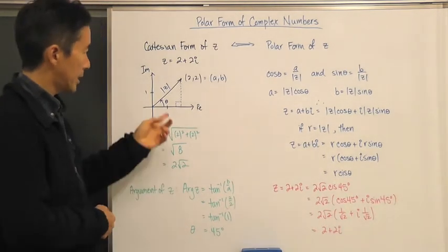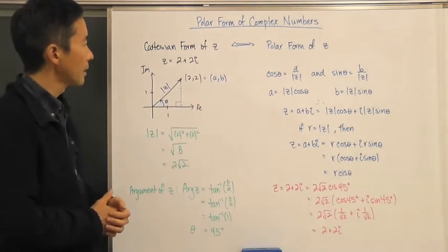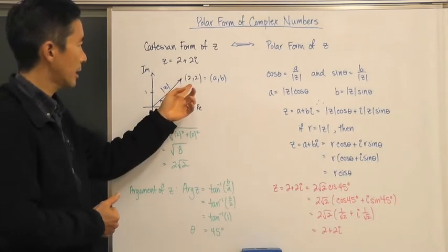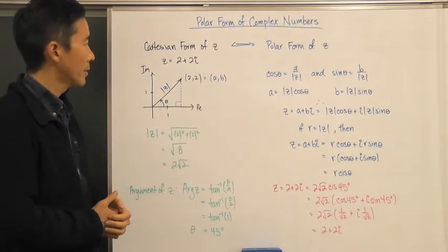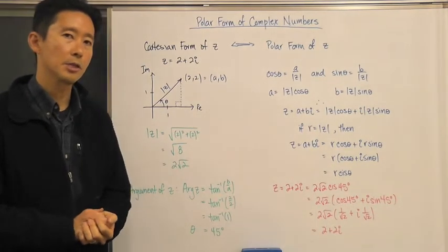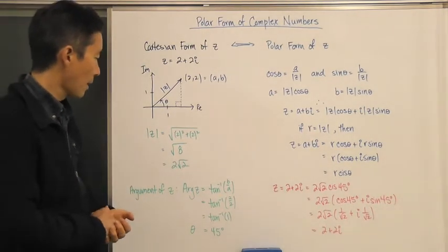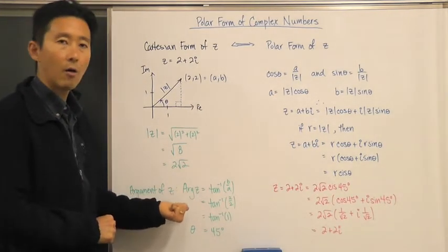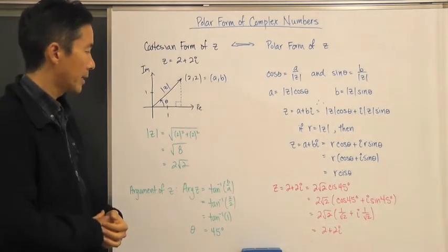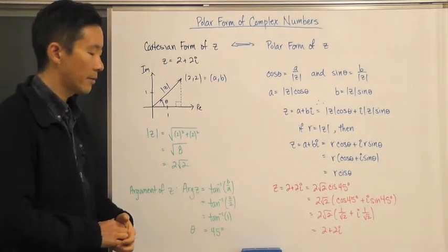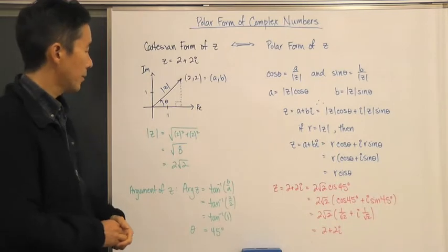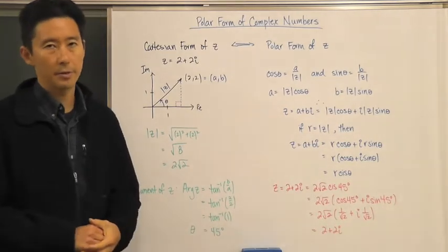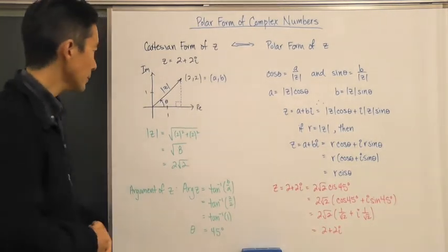If we take a look at this again, this is just going to be a right triangle. In order to find the angle, we can look at the values of A and B and use the tangent function to determine what that angle is. So the argument of Z is simply the inverse tangent of B over A. In this case, we have the inverse tangent of 2 over 2. The inverse tangent of 1 is of course 45 degrees.